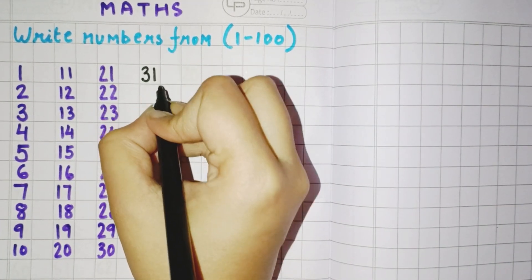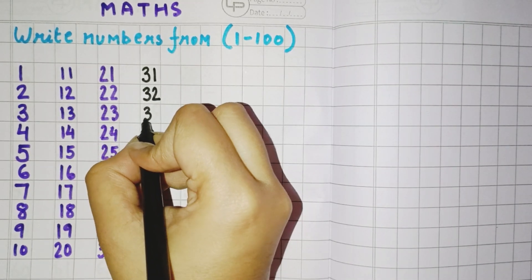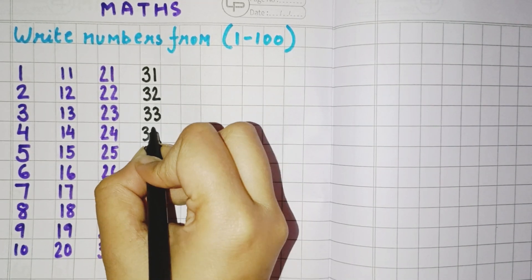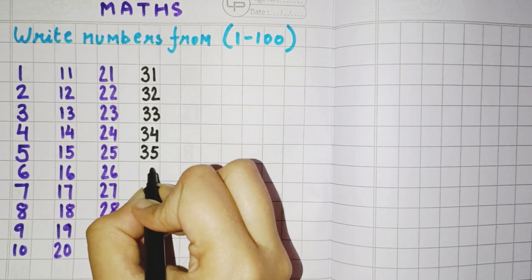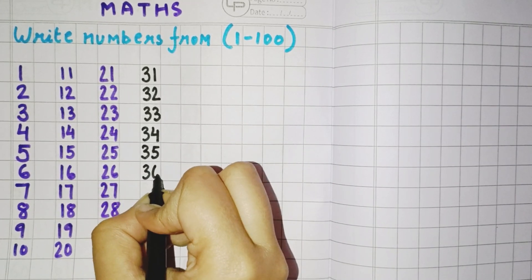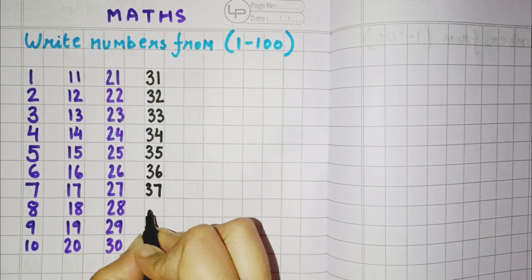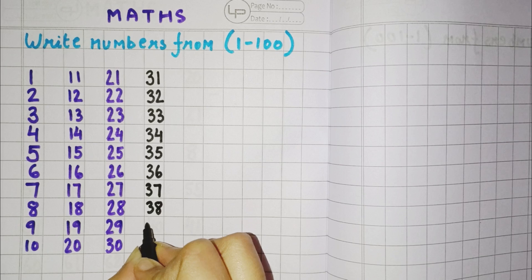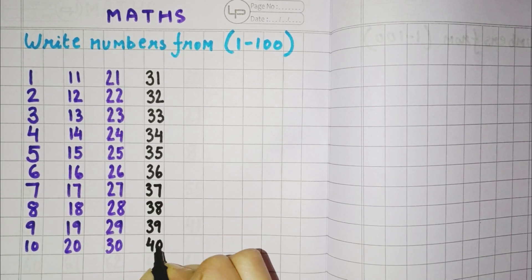3, 1, 31. 3, 2, 32. 3, 3, 33. 3, 4, 34. 3, 5, 35. 3, 6, 36. 3, 7, 37. 3, 8, 38. 3, 9, 39. 4, 0, 40.